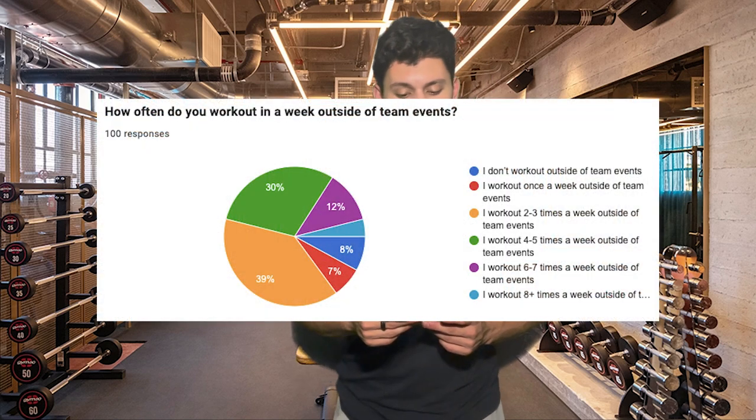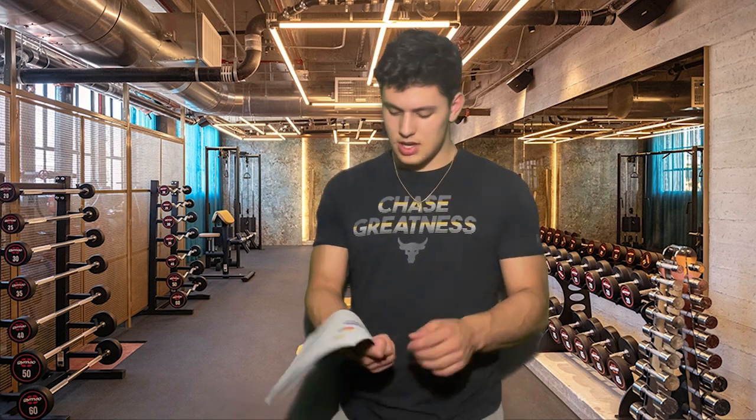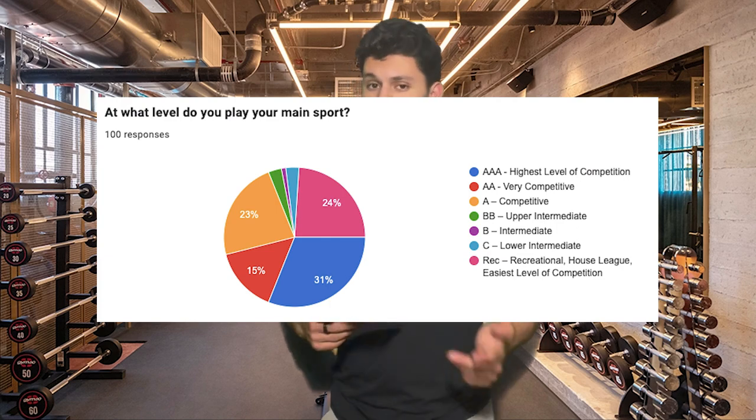For my observations I'm going to share the two questions I used for my two-variable statistics graph, since I only have ten minutes. Question three: how often do you work out in a week outside of team events? The highest response was two to three times a week at 39%, and the lowest was eight or more times a week at 4%. Question six: at what level do you play your main sport? The highest was Triple-A at 31% and the lowest was B at 1%. I chose those two questions because they were the most appropriate to my hypothesis — the amount of time you spend working out outside of your sport should technically result in playing at a higher level.